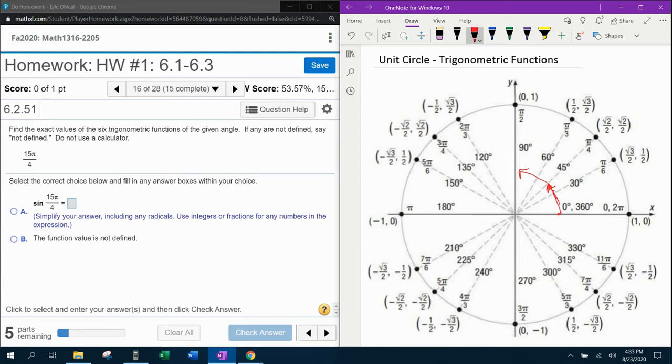So let's count: 1π over 4, 2π over 4, 3π over 4, 4π over 4. Notice 4 over 4 is 1, gets us to π. All we have to do is do that 15 times. So here's 4, 5, 6, 7, 8.